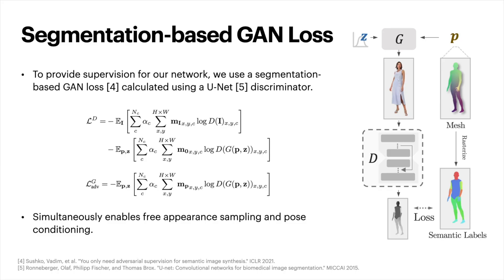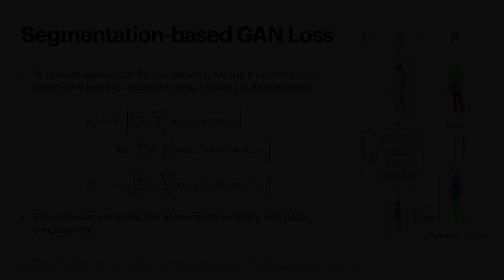We train our network with a segmentation-based GAN loss that uses a U-Net discriminator to label each pixel as either fake, background, or one of 25 semantic classes, such as head and torso. This is different from the traditional GAN training that only classifies whole images as fake or real. This method helps the generator learn how to map 3D coordinates to 2D textures, and simultaneously enables free appearance sampling and pose conditioning.